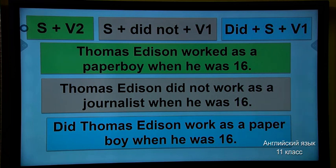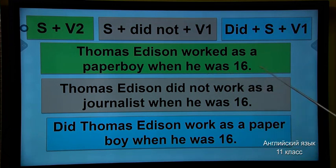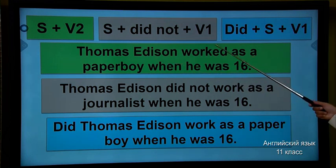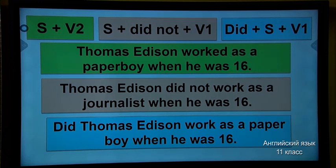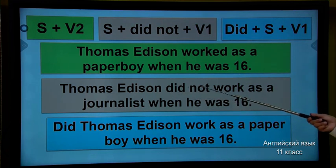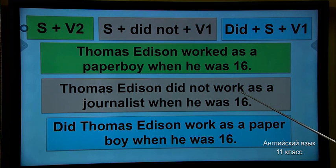Pay attention to past simple structure. For an affirmative sentence: subject plus verb 2. Like, Thomas Edison worked as a paper boy when he was 16. Subject: Thomas Edison. We have regular and irregular verbs — for regular verbs we add -ed; for irregular verbs you have to learn them because there's no rule. For a negative sentence: subject plus did not plus verb 1, because we cannot use two past tenses in one sentence. So, Thomas Edison did not work as a journalist when he was 16 — we use 'did not work', not 'did not worked'.